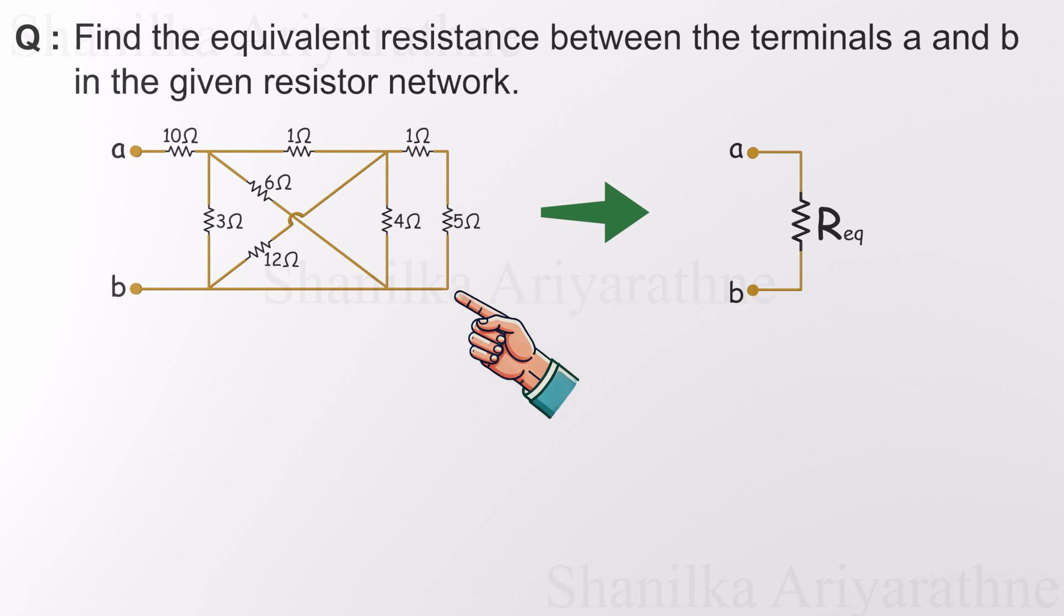At first glance, this circuit might look like a tangled mess, almost like spaghetti wires. The crossing resistors, especially the 6 ohms and 12 ohms ones, can really throw you off and make it seem more complex than it actually is. But here's where the magic happens. Take a moment to really study the connections, not just the layout.